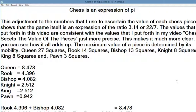The maximum value of a piece is determined by its mobility. So the queen can hit 27 squares from a center square, the rook 14, bishop 13, the knight 8, the king 8 and the pawn 3.